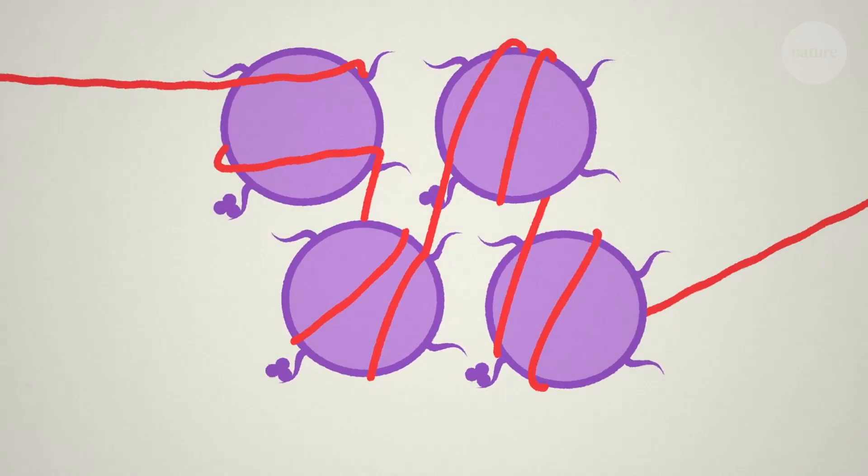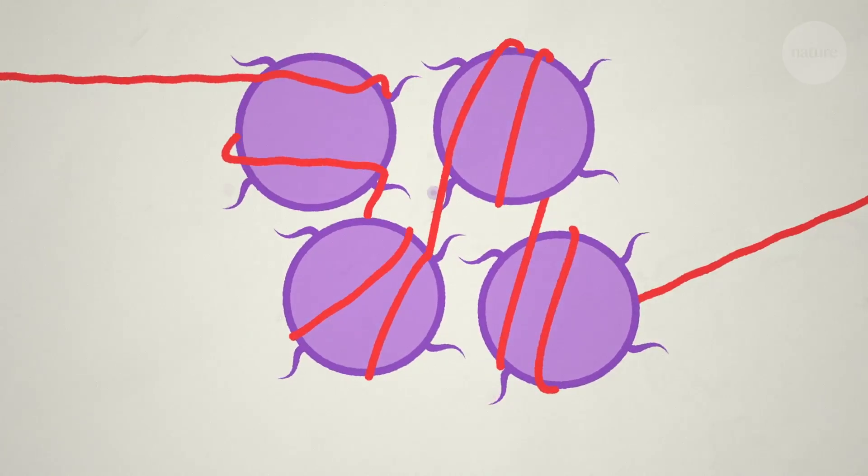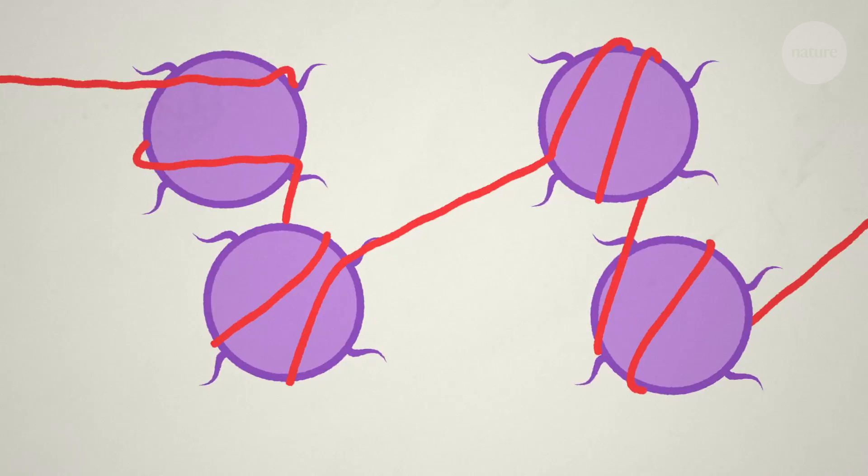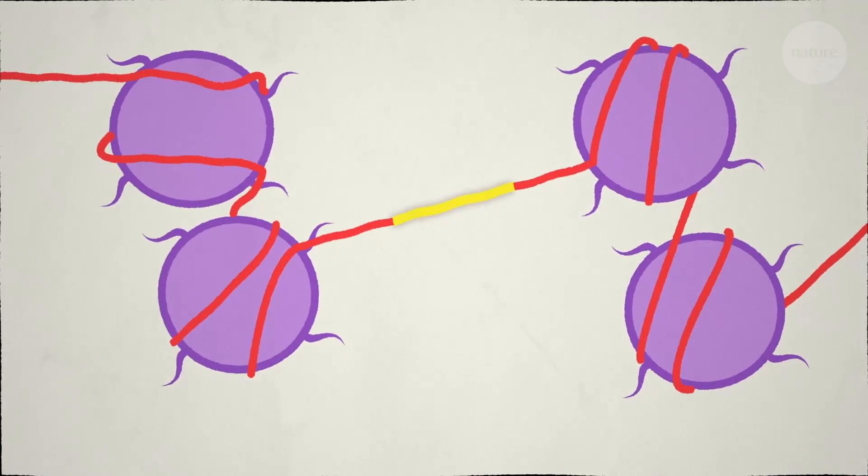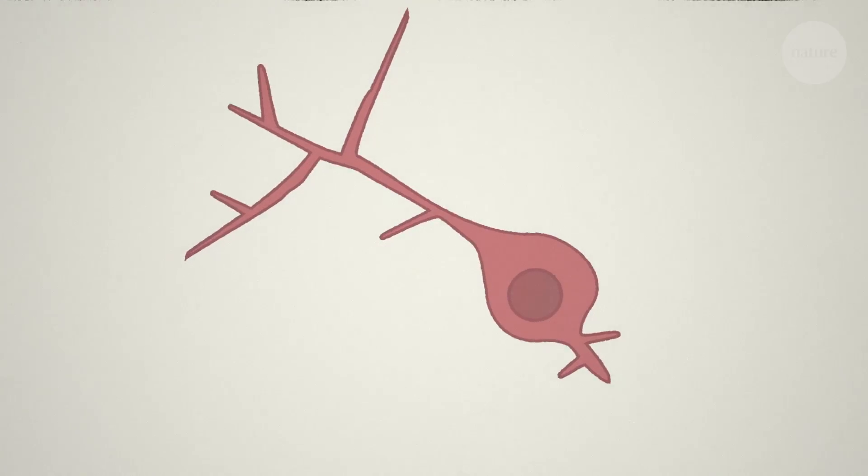Over time, the level of these marks gradually decreases, which exposes the DNA and allows it to be expressed. The epigenetic brake is lifted, and the neurons can mature.